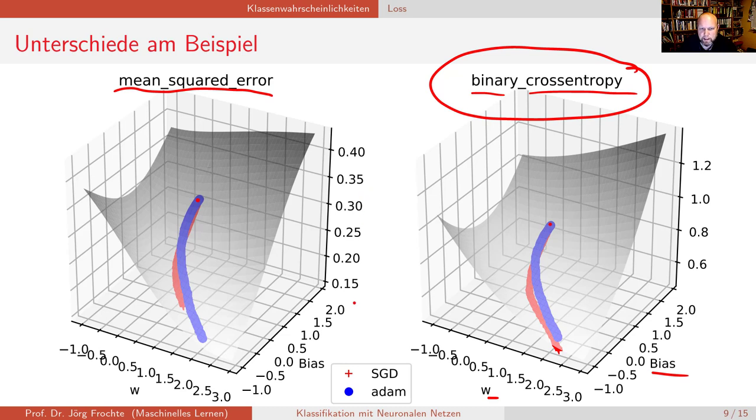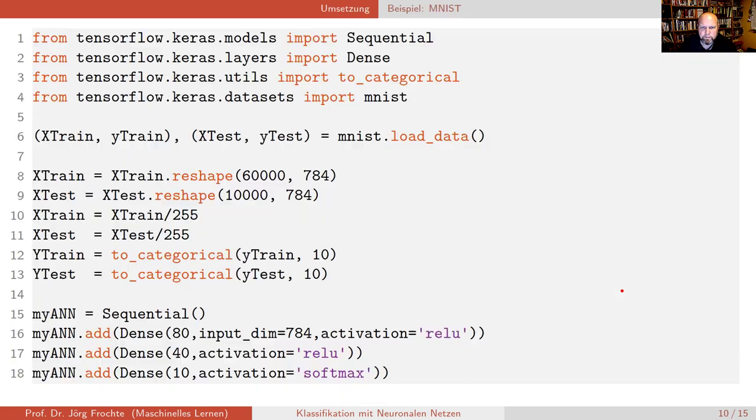Ich habe hier ein relativ einfaches Beispiel genommen, wo es darum geht, im Prinzip die gleichen Neuronen zu berechnen. Aber, ich habe zwei Sachen verglichen, Sie bekommen unterschiedliche Landschaften. Für viele Klassifikationsprobleme erzeugt tatsächlich die Kreuzentropie eine sympathischere Landschaft für einen Optimierungsalgorithmus. Im Allgemeinen ist die Kreuzentropie die bessere Wahl für ihre Optimierungslandschaft. Und nebenbei bekommen Sie halt wirklich Wahrscheinlichkeiten als Aussage.